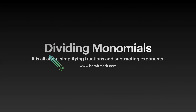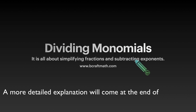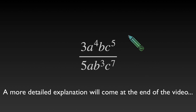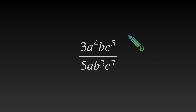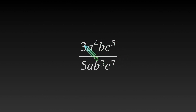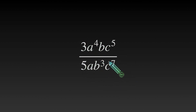Here's a quick way to divide monomials — it's all about simplifying fractions and subtracting exponents. Don't let the word monomial confuse you. A monomial is an algebraic term that can have numbers and variables, but it's just one term. There's no addition or subtraction between any of these numbers or variables. So we have a monomial at the top and a monomial at the bottom.